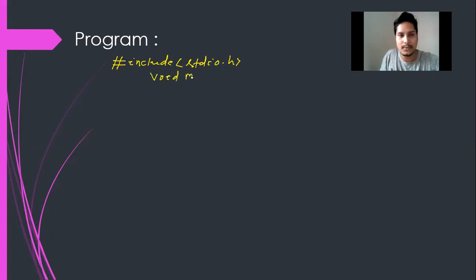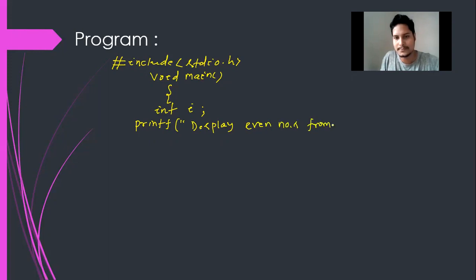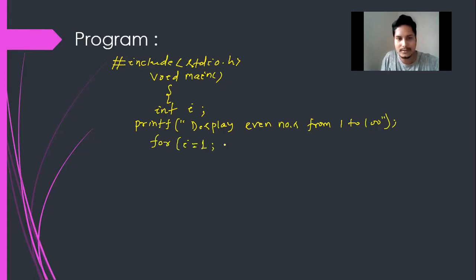Now I am writing void main, the function from which execution starts. Then I am declaring a variable int i semicolon. Then I am writing printf within double quotation — 'display even numbers from 1 to 100' — with bracket and semicolon. Then I am writing a for loop: for i equal to 1 semicolon, i less than equal to 100 semicolon, i plus plus.